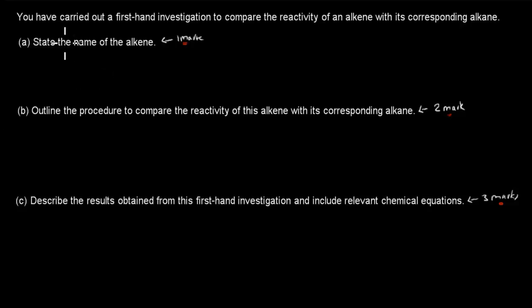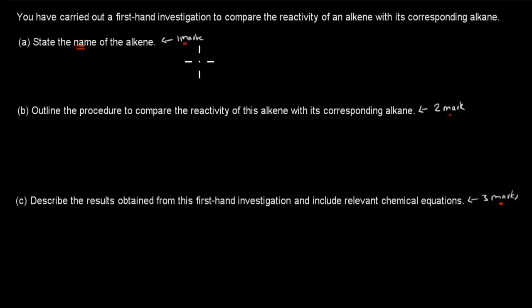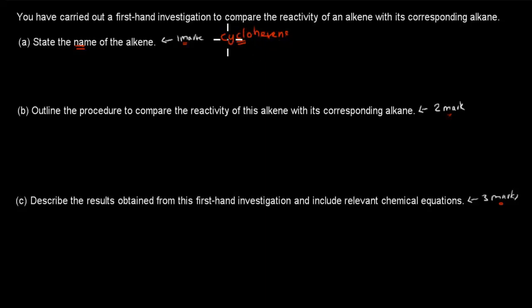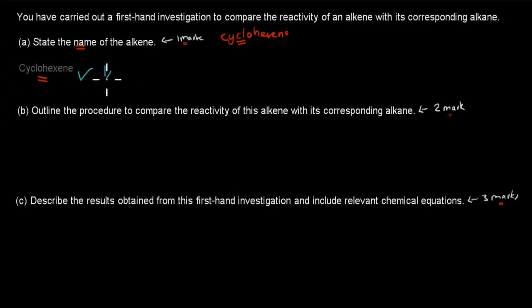Welcome back. For Part A, that's a relatively simple one — all you have to do is state the name of the alkene. Remember, that was an experiment where we had bromine water and you put an alkene and an alkane into solution. The reason why we chose cyclohexene for the alkene was because the cyclo- structure made it soluble in water, whereas normal ethylene would not be soluble in water. So cyclohexene is the answer, and that gets you one mark.